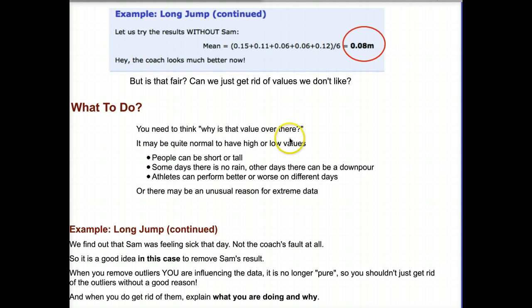So what to do? You need to think. Why is that value over there? When you're looking at data, when you're graphing data and there's outliers, what's going on? It may be very normal to have high and low values. Occasionally, people are very short. Occasionally, people are really tall. They can be outliers. Not every female is 5 feet 4. Sometimes you have a female that might be 4 feet or 7 feet. Same thing with weather. You can have days and days of no rain, and then suddenly you can have a huge downpour. So clearly, we do have outliers.